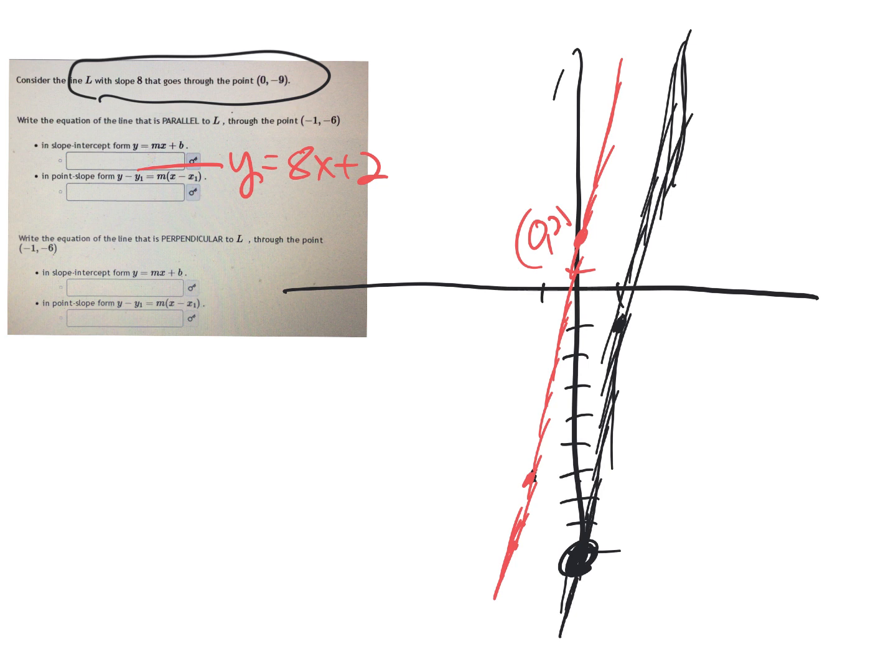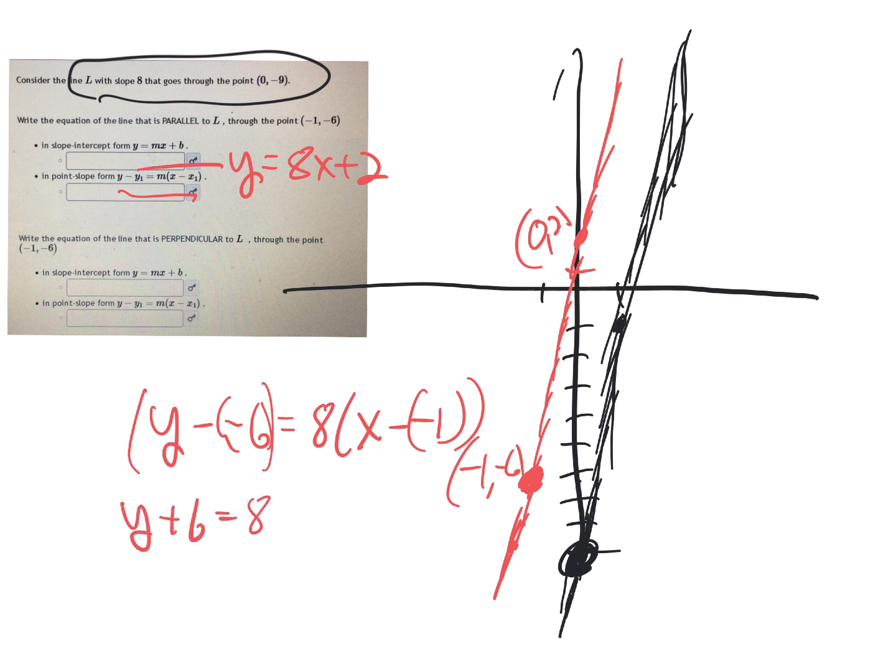Now to get the point-slope form of the line, you can pick any point on there, but since they already gave us (-1, -6), we can just do point-slope form. So y minus (-6) equals the slope times x minus (-1). Basically it's going to be y + 6 equals 8 times (x + 1), and that's what this expression is.